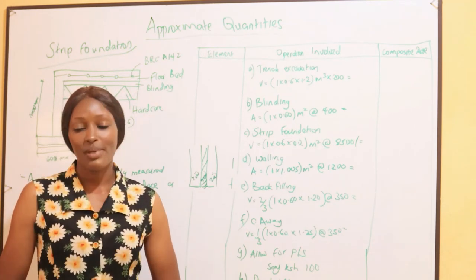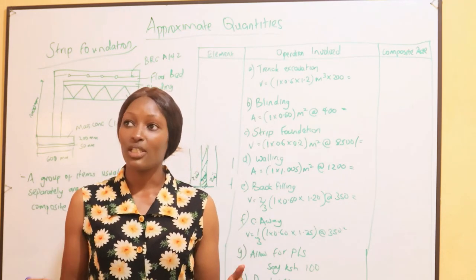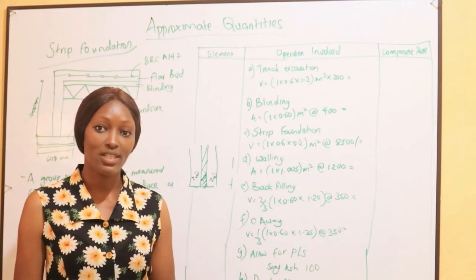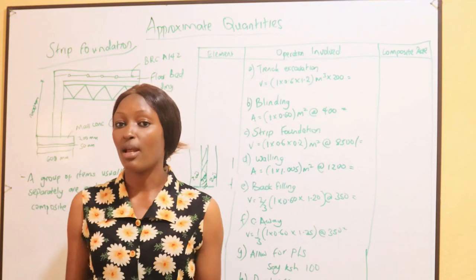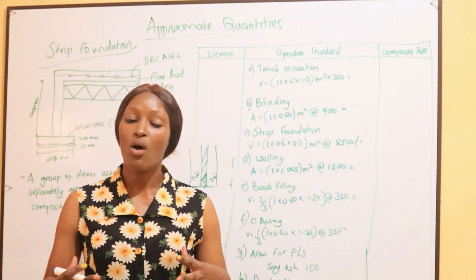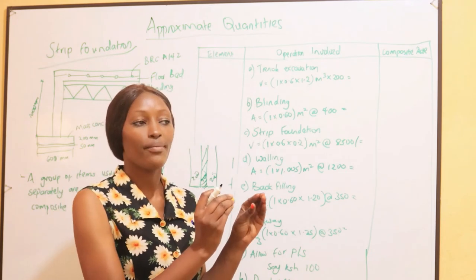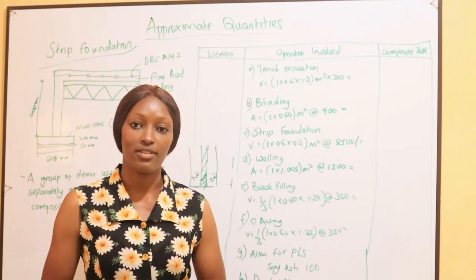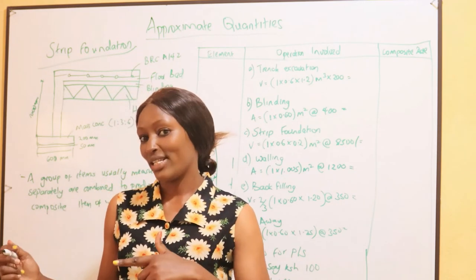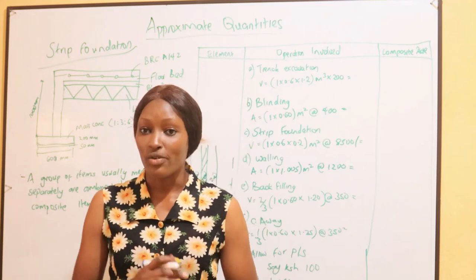A quick recap of approximate estimation methods: we have five methods. First, the Functional Unit Method, where we consider the number of functional units in a building — for example, for a classroom, the number of desks. If one classroom had 100 seats and cost a certain amount, we find the cost per desk and relate it to the new capacity. Second, the Floor Area Method, where we measure the area internally, find the cost per meter squared of a comparable building, and multiply to get the estimated cost.